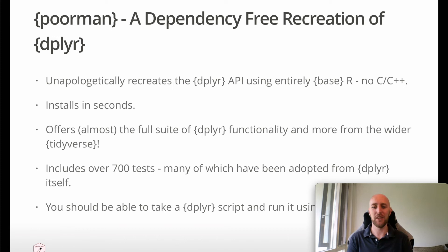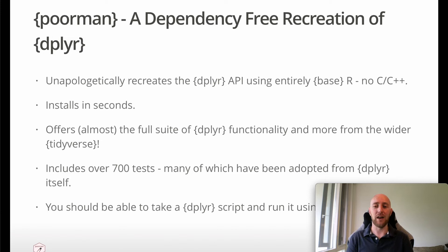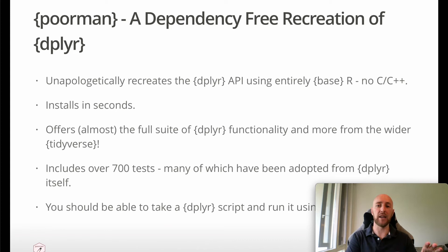Pawman is a dependency-free recreation of dplyr, and it does this in a completely unapologetic way — it really does just copy the dplyr API, function for function. And it does this all using base R — there's no C or C++. You might be thinking, what about speed? Well, Pawman is not trying to win any speed competitions. Pawman's focus is elsewhere: creating a human-readable API in a dependency-free manner in a way people can learn from. And because it's written in base, we get the benefit that it installs in seconds, whereas dplyr takes quite a while.